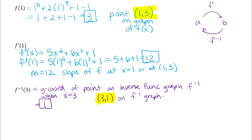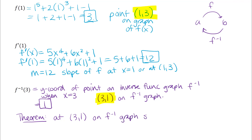Now for derivatives of inverse functions: I have the point 1 comma 3 on the original function with slope 12. Using the theorem from this section about slopes of inverse functions, at the corresponding point 3 comma 1 on the graph of the inverse function, the slope will be the reciprocal of 12 — that is, 1 over 12. Corresponding points on the original function and inverse function have reciprocal slopes.